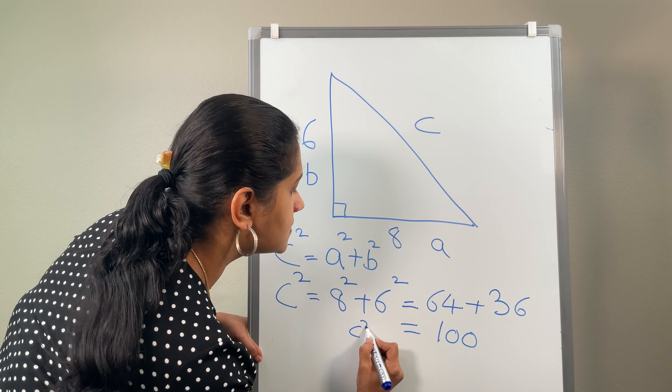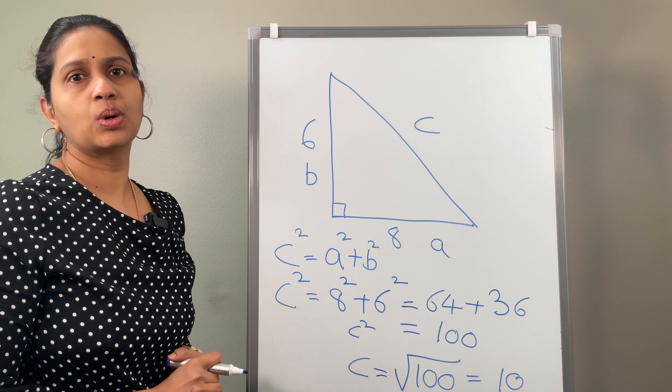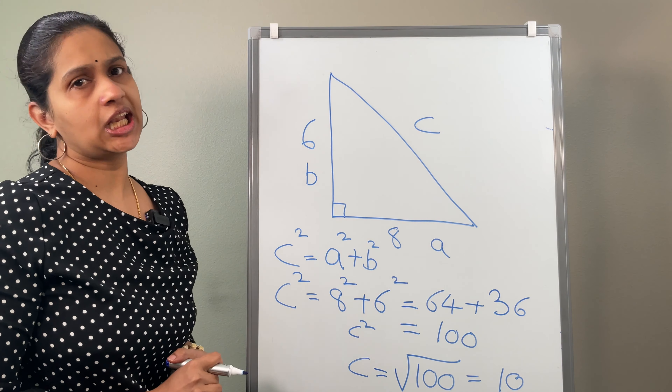What we need is not C squared, but C. C equals the square root of 100, which is equal to 10. I have already uploaded a video about square roots and provided the link in the description below — I recommend checking it out if you are not sure how to do square roots. So C is going to be the square root of 100, which equals 10. That is how you find the hypotenuse using the Pythagorean formula.